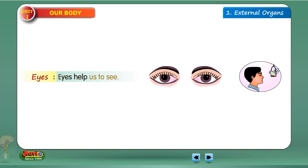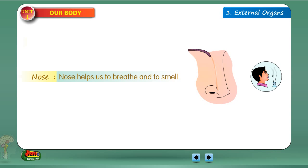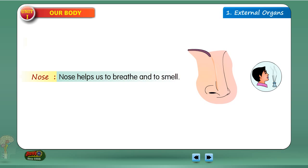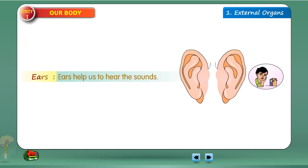Eyes help us to see. Nose helps us to breathe and to smell. Ears help us to hear the sounds.